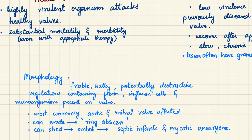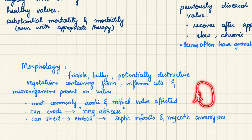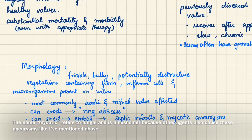Similarly, emboli can get stuck in arterial walls and cause inflammation, weakening the wall and causing ballooning of the vessel wall — leading to the formation of aneurysms known as mycotic aneurysms.